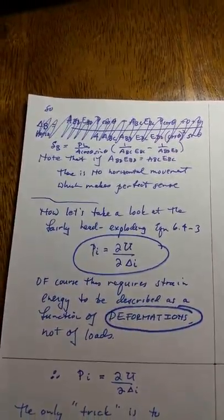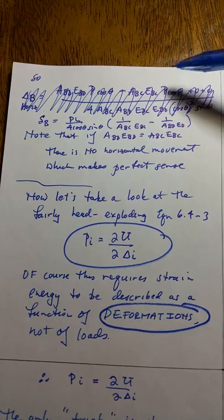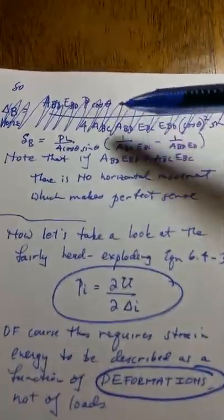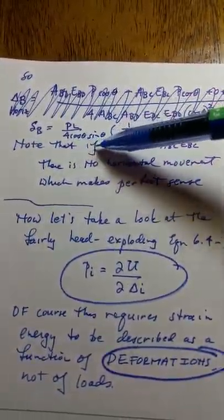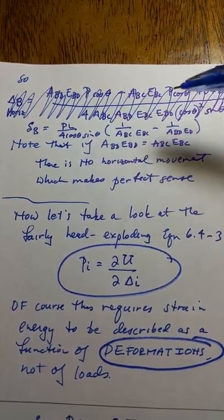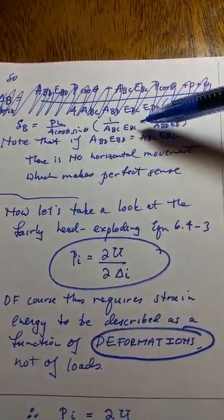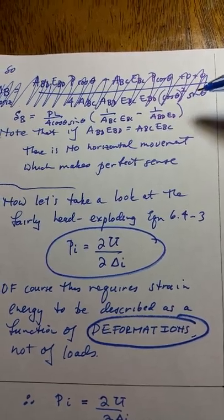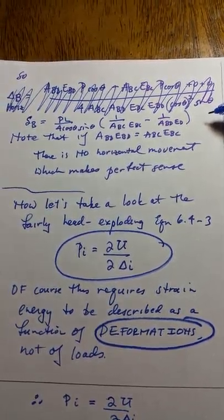So we have that integral from the previous page, and it turns out after setting q equals to zero, you have a pl over four cos theta sine theta times one over ae of the one member minus one over ae of the other member.